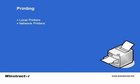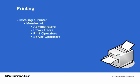Every physical printer connected to a Windows 2003 server is represented as a logical printer. A logical printer defines the characteristics of the printer itself and is made up of the driver, the printer settings and other properties that control how your server communicates with the physical print device. To add a printer you must be a member of the administrators, power users, print operators or server operator groups. Anything less and you'll be denied the ability to add a printer to your server.